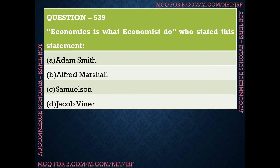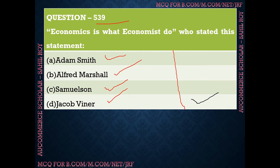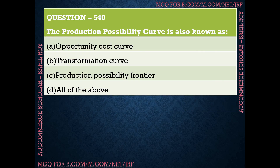Question number 539: 'Economics is what economists do' — who stated this statement? Options are: Adam Smith, Alfred Marshall, Samuelson, or Jacob Viner. The correct answer is option D — Jacob Viner stated 'economics is what economists do.'